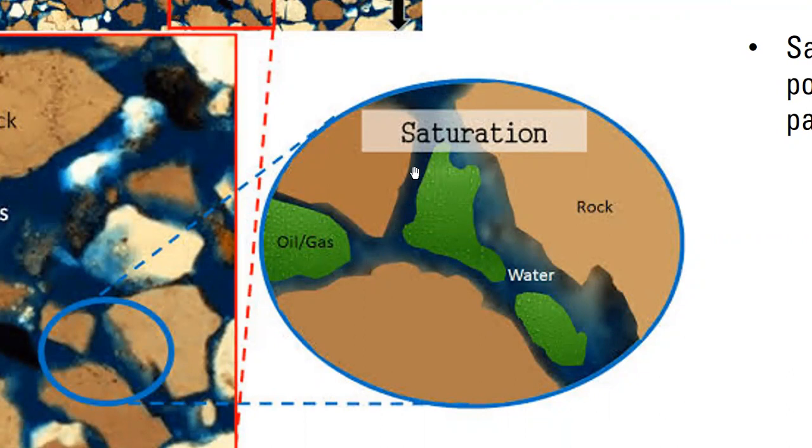You see the rock grains. The black area shows the water, and the green can be oil or can be gas.